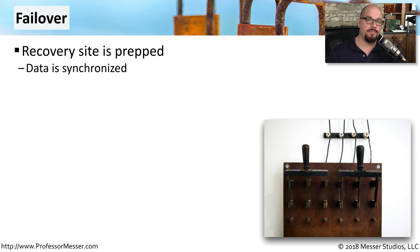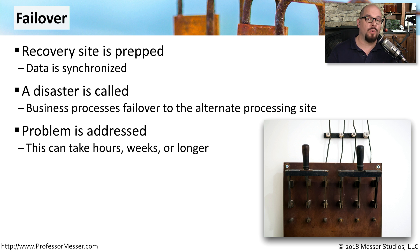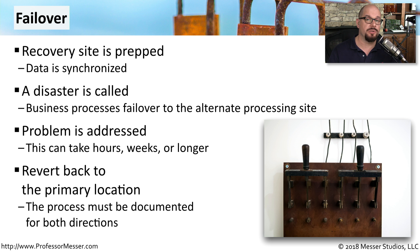Many organizations will have a disaster recovery site that they can use if something occurs at the primary location. This recovery site is usually prepared and has data synchronization or any other resources you need to bring that site up and running. When a disaster is called, all of your business processes will fail over to this disaster recovery site. This site may remain up and running for weeks or even months, depending on the scope of the event, and eventually you'll need to revert back to the original location. It's important to document things as they occur in both directions so that as you move things into the disaster recovery site, you'll understand what the challenges might be for moving things back.